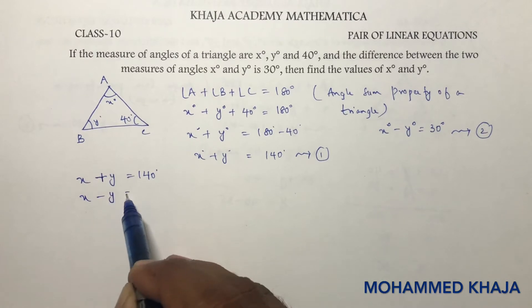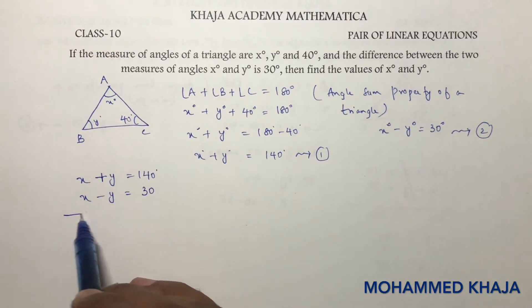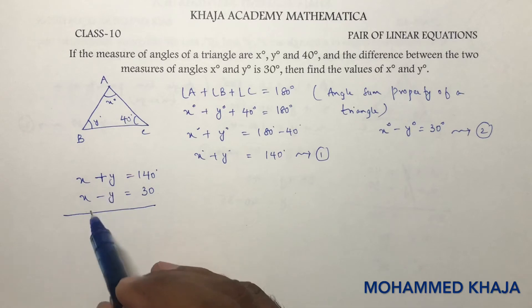So we have x plus y equals 140 degrees and x minus y equals 30 degrees. Since we already have plus and minus signs, I'll add these two equations.